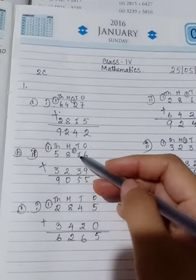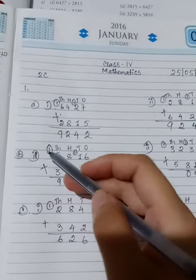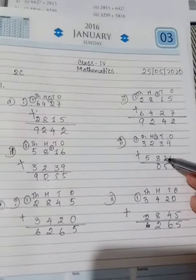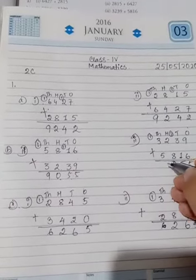15, 1 is carried over, 1 plus 1, 2, 2 plus 3, 5, 8 plus 2, 10, 0, 1 is carried over, 5 plus 1, 6, 6 plus 3, 9. Here we reverse these numbers and we get same answer.